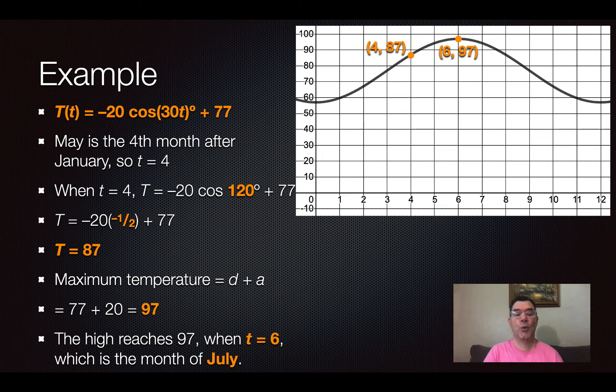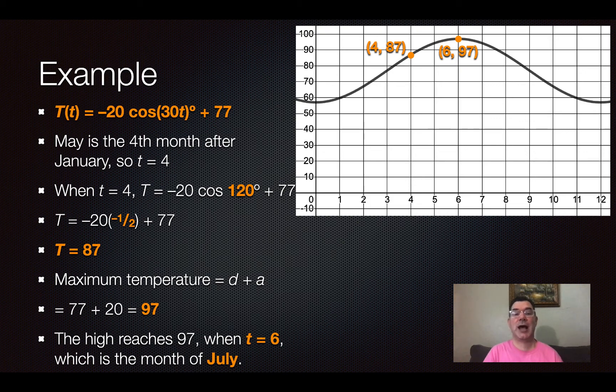All right, so that happens when t equals 6. And so the month that is six months after January is going to be July. So the high of 97 is going to happen in July.